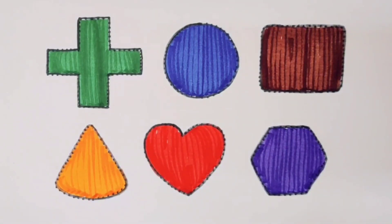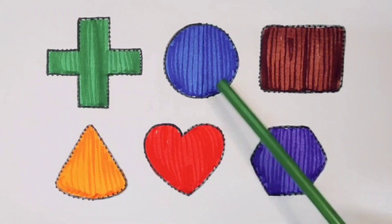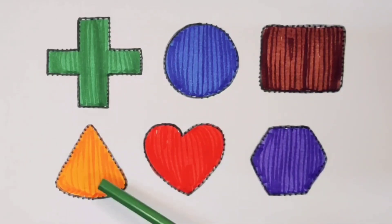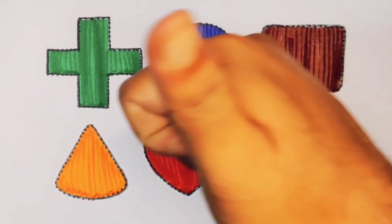What we learn? We learn green color cross, blue color circle, chocolate color rectangle, orange color triangle, red color heart, purple color hexagon. Thank you for watching my video.